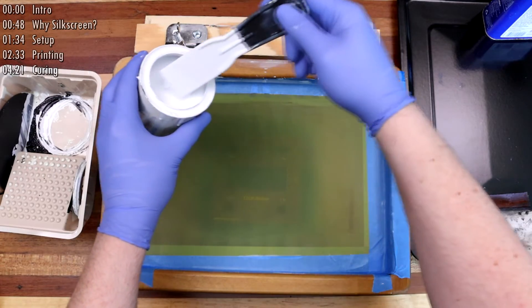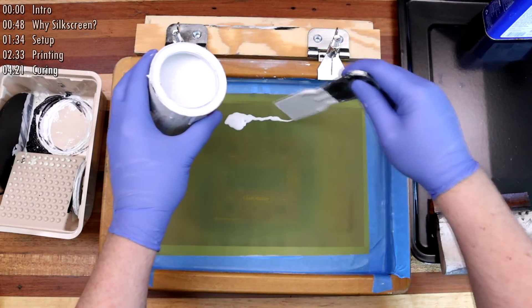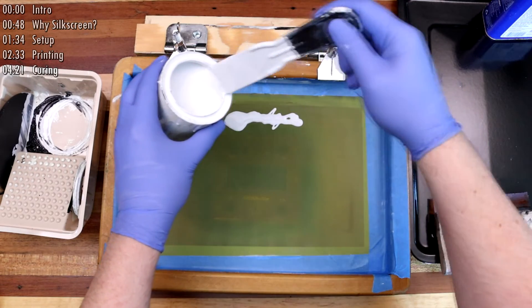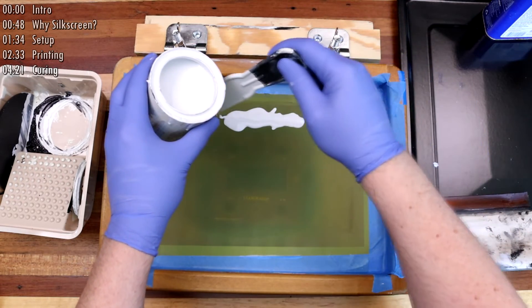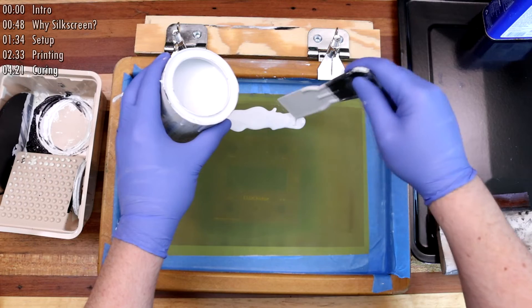To start the printing, I pour a bit of ink onto the screen just above the art. As you can see, the ink I'm using is pretty thin, which is another reason why I chose a higher mesh count screen.